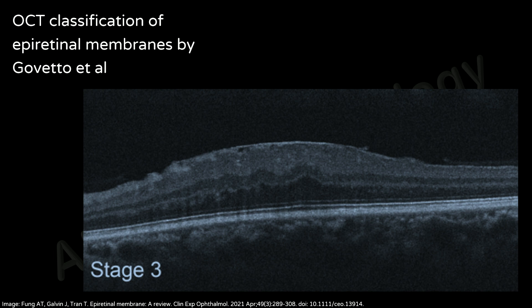Stage three is defined as the presence of an ERM with continuous ectopic inner foveal layers anomalously crossing the central foveal area. The foveal depression is absent and widening of the outer nuclear layer is often less pronounced when compared with stage two ERMs. In stage three ERMs, all retinal layers are clearly identified on OCT.